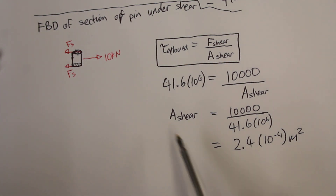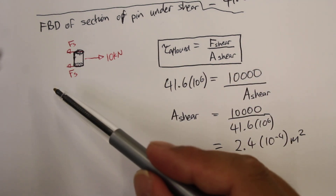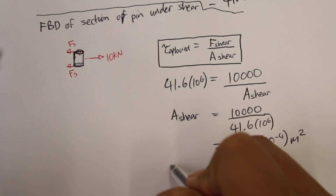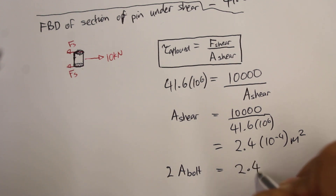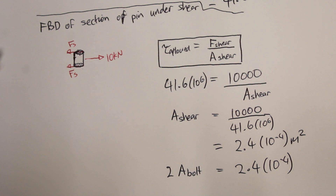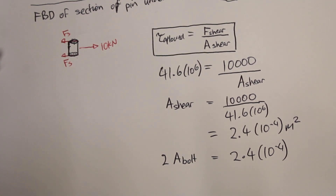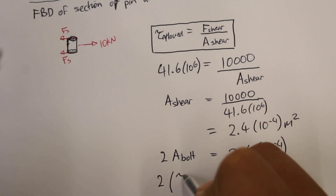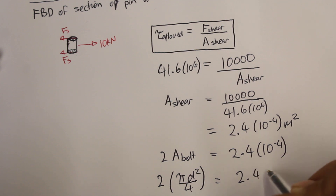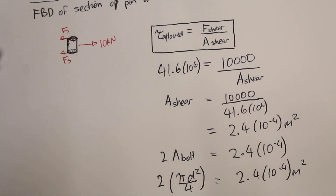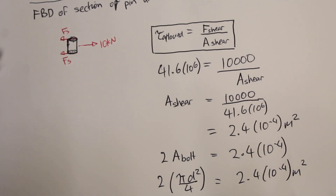The area in shear is actually equal to 2 times the area of the bolt, because we had 2 areas being cut through. So 2 times the area of the bolt equals 2.4 times ten to the minus 4 meters squared. The area of the bolt is related to the diameter, so 2 times pi d squared over 4 equals 2.4 times ten to the minus 4 meters squared. Then we can rearrange and solve for d.